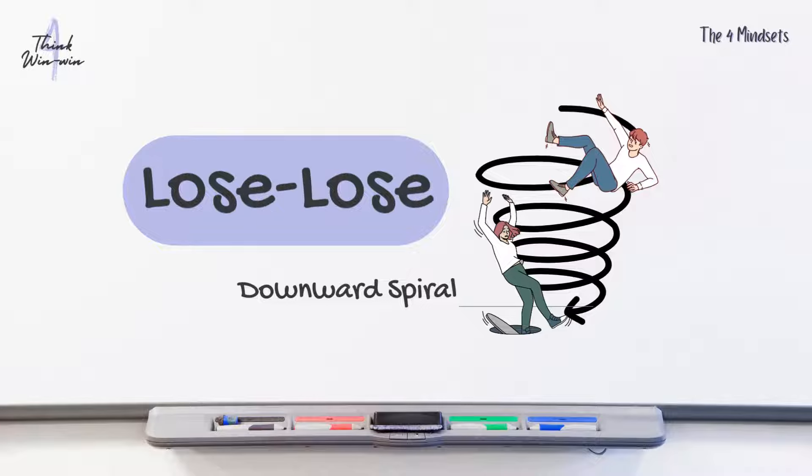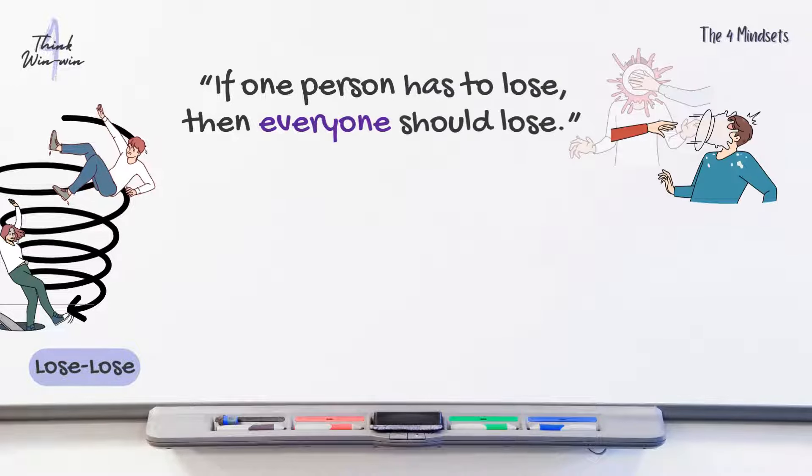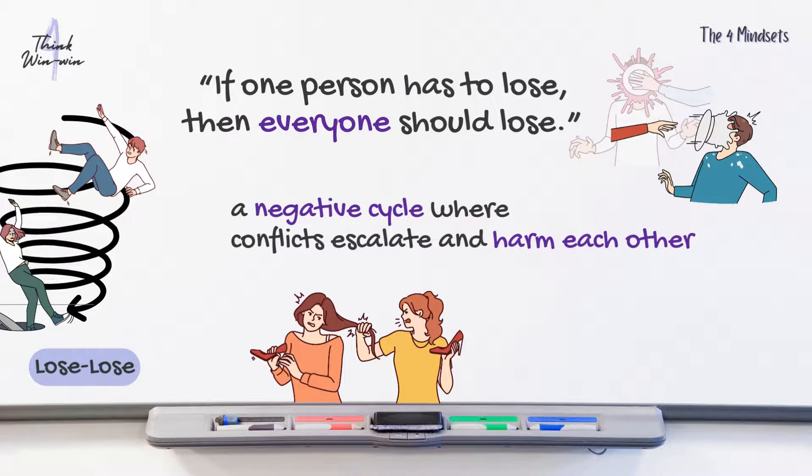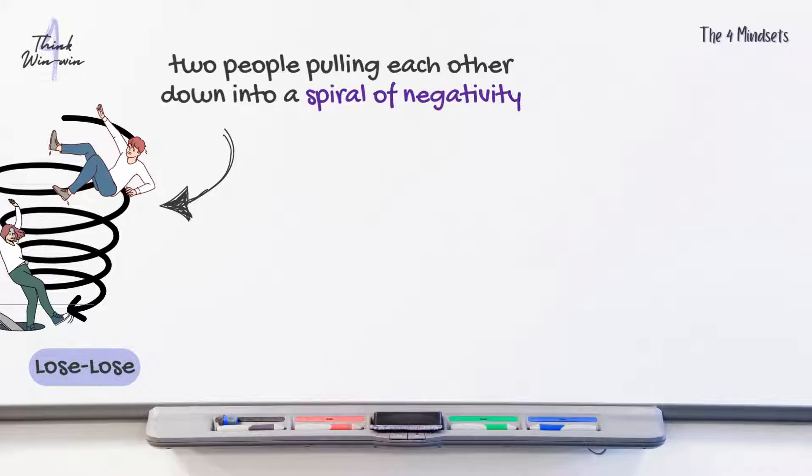The third mindset is lose-lose, represented by the downward spiral. This mindset believes that if one person has to lose, then everyone should lose. It's like being caught in a negative cycle where conflicts escalate and harm each other. It's similar to two people pulling each other down into a spiral of negativity.